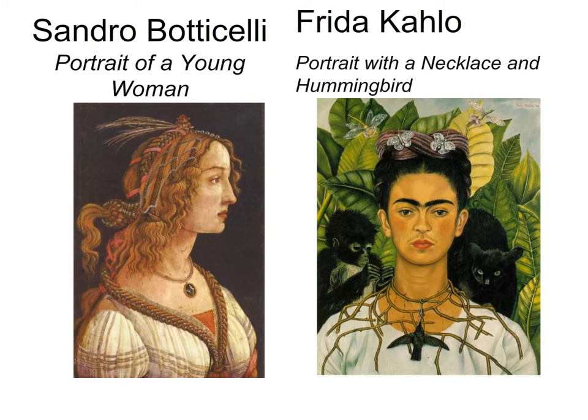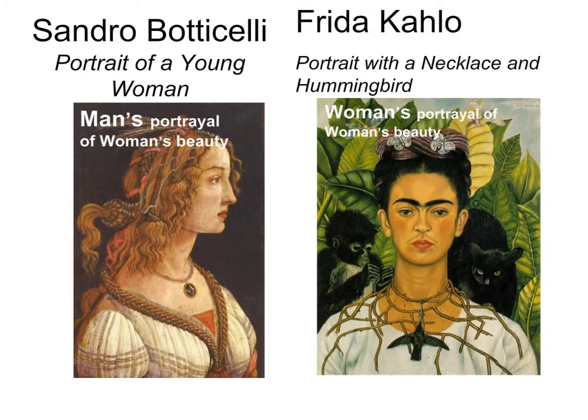Here's a couple of paintings you've seen: Sandro Botticelli's Portrait of a Young Woman and Frida Kahlo's Portrait with a Necklace and a Hummingbird. There are a few things you need to recognize about these pictures. Sandro Botticelli painted a picture of a woman; Frida Kahlo painted a picture of herself. That understanding will add some meaning. You need to pick out some differences — notice the backgrounds, the clothing, the objects — and determine how those things contribute to how you perceive these women.